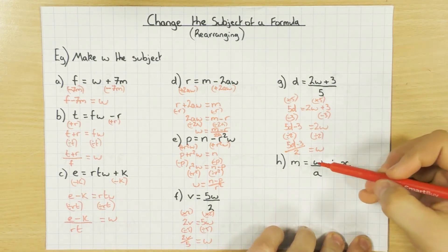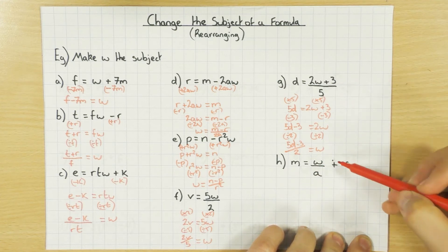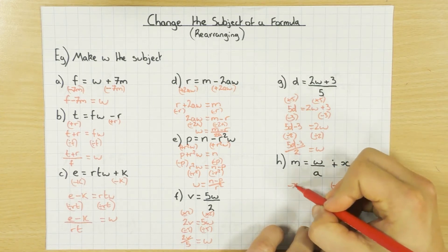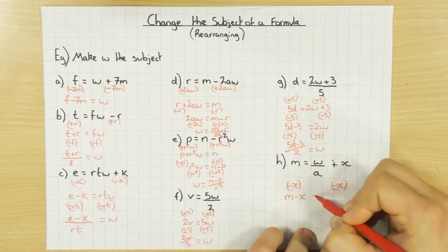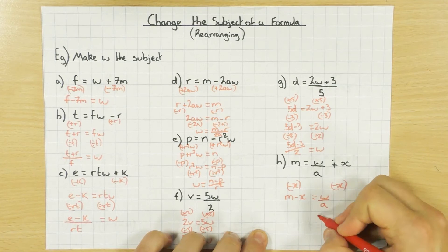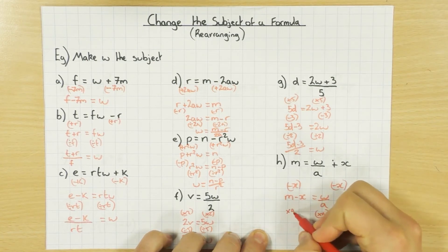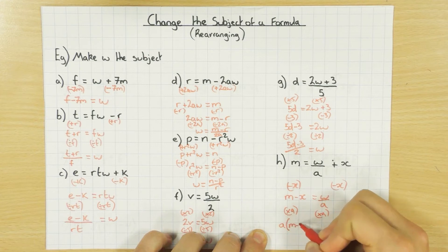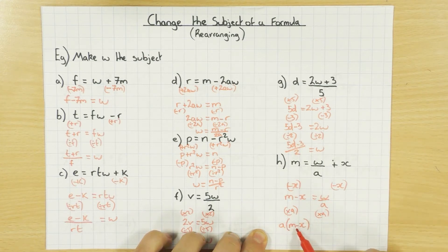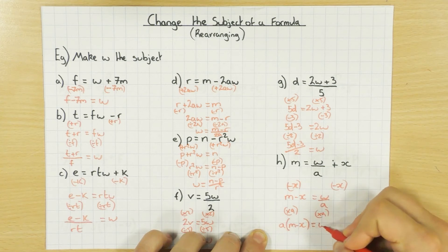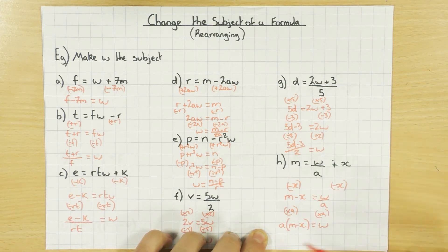This one: W is divided by A, but I've randomly got this plus X. So I want to get rid of that first — I'll minus X from both sides, giving M minus X equals W divided by A. Now I get rid of the divide by A by multiplying both sides by A. I want to times all of M minus X by A, so I put it into a bracket. So I end up with A times (M minus X) equals W. You can expand the brackets if you want, or leave it — either way W is now the subject.